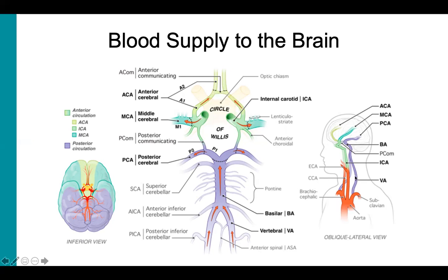The vertebral arteries, shown here in purple, are branches of the subclavian arteries. They ascend through the transverse foramina of cervical vertebrae C6 to C1 and then enter the foramen magnum, where they join on the ventral surface of the brain stem at the level of the pons to form the basilar artery, shown here also in purple. The basilar artery then bifurcates at the base of the brain to form the right and left posterior cerebral arteries. Then, the posterior cerebral arteries complete the circle of Willis by joining the anterior circulation via the posterior communicating arteries.